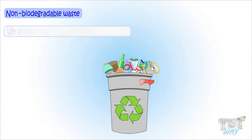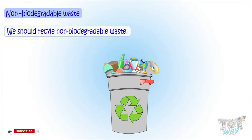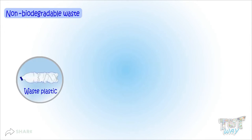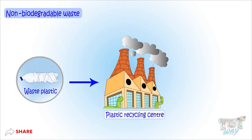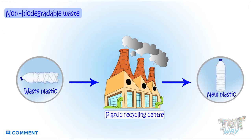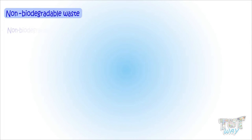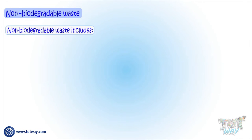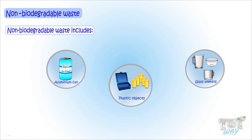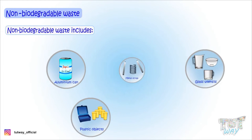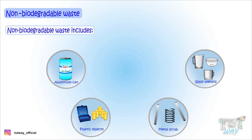We should recycle non-biodegradable waste and try to reuse it as much as possible. For example, plastic waste can be sent to a plastic recycling center where it is molded again to make new objects. Non-biodegradable objects include aluminum cans, glass, plastic products, metal scrap, and bottles.